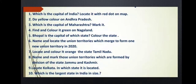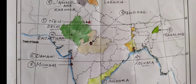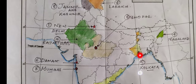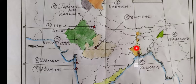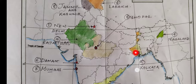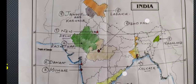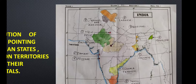Number nine: locate Kolkata and name the state in which it is located. Kolkata is located in West Bengal. I have located Kolkata at the bank of the river Ganga. This is an important city — the capital of West Bengal — and I have also colored the state of West Bengal. Many of you have done this wrong by coloring Bangladesh along with West Bengal. Bangladesh is another country, so you should color West Bengal properly.